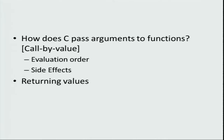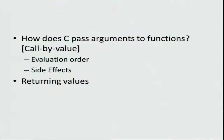In this we will discuss a few technical details about how C executes its functions. In particular, we will see how C passes arguments to its functions and how it returns values. When passing arguments, we will talk about issues like evaluation order — in what order are arguments evaluated if there are multiple arguments — and we will discuss what are known as side effects.